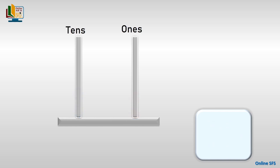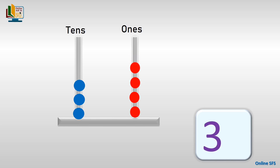The next one: now you count the beads on the tens rod and count the beads on the ones rod. What number is shown on the abacus? Great, you're absolutely right — the abacus shows thirty-four. Three in the tens and four in the ones.